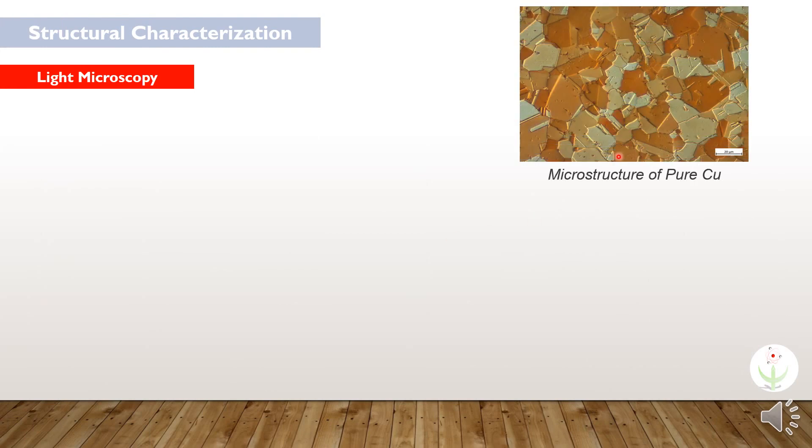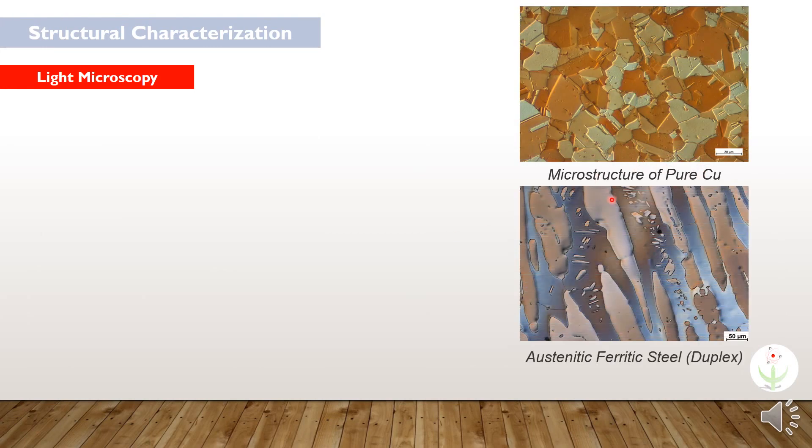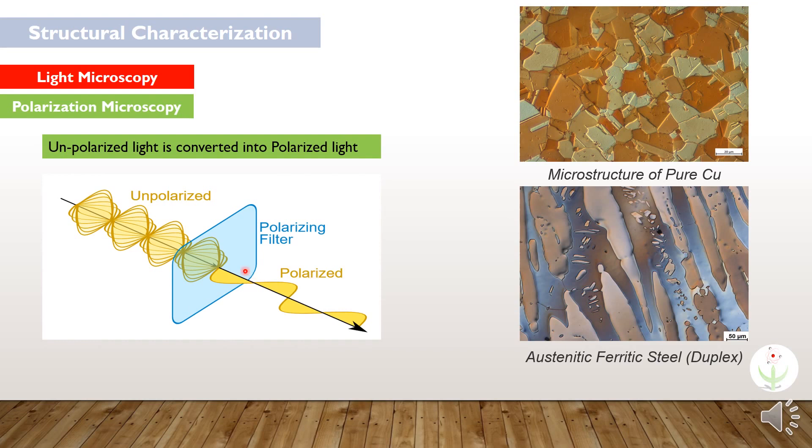This is the microstructure of pure copper and this is the microstructure of austenitic ferritic steel. These microstructures have been taken from polarization microscopy techniques. In this technique, unpolarized light is first converted into polarized light. This polarized light enhances the image contrast and improves the image quality.